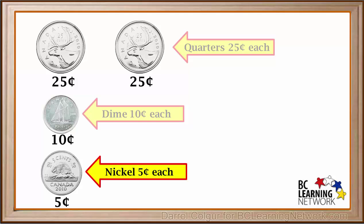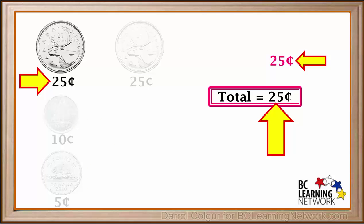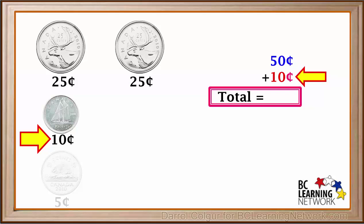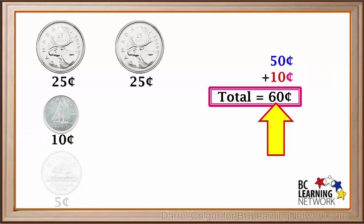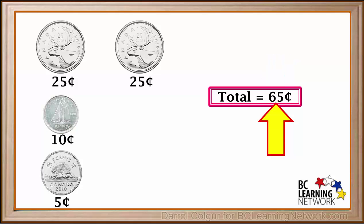Next we'll count up the values to get the total amount. We'll keep track of the total here. We have 25 cents plus 25 cents equals 50 cents, plus 10 cents equals 60 cents, plus 5 cents equals 65 cents. So the total value of this group of coins is 65 cents.